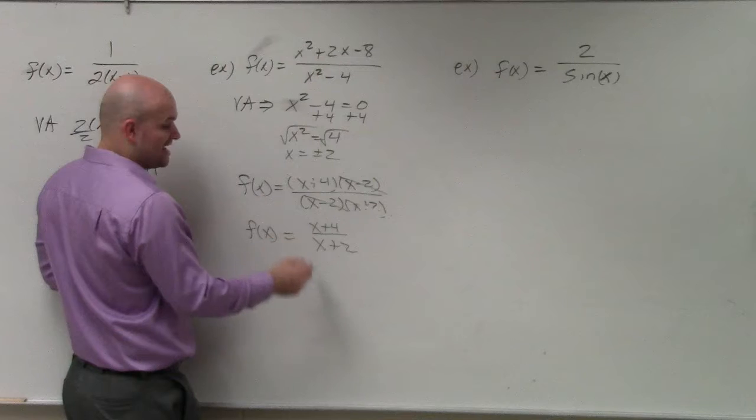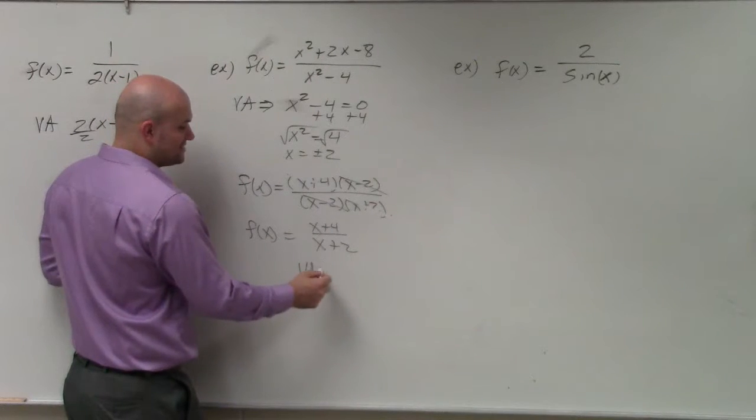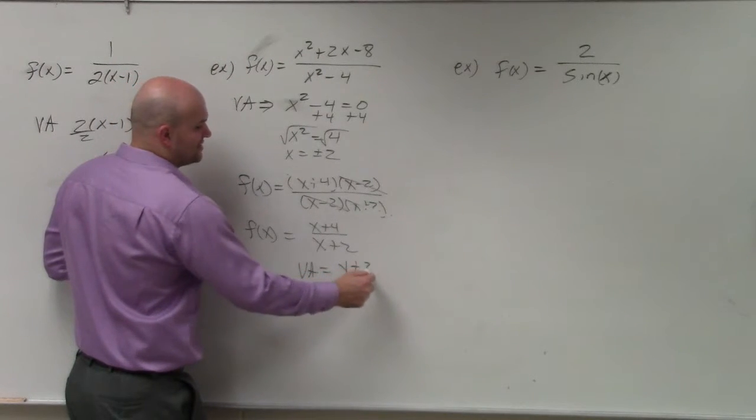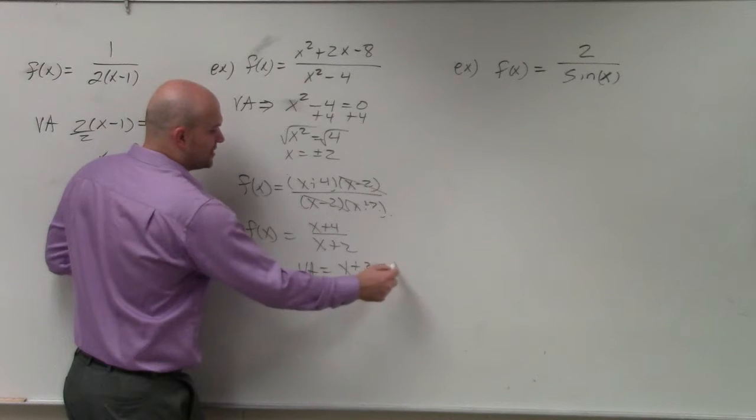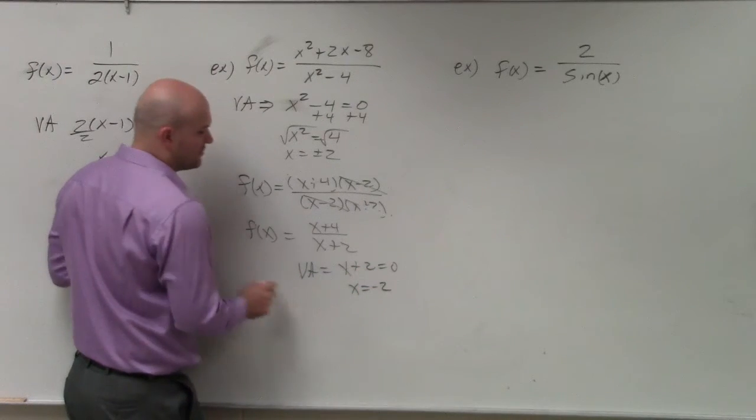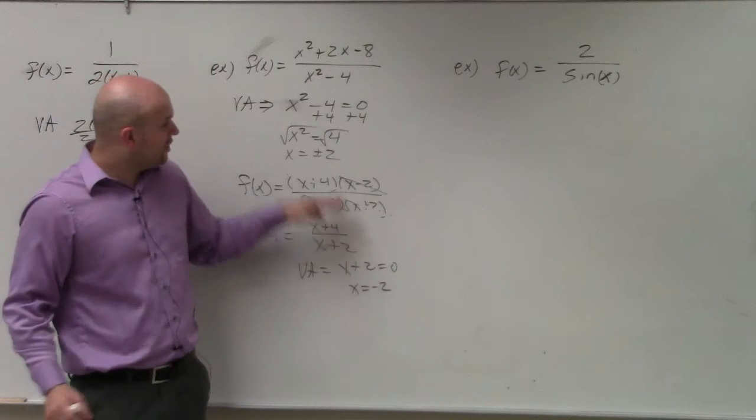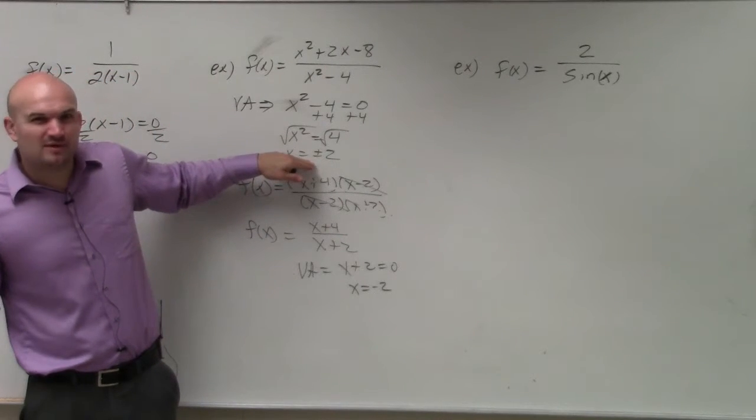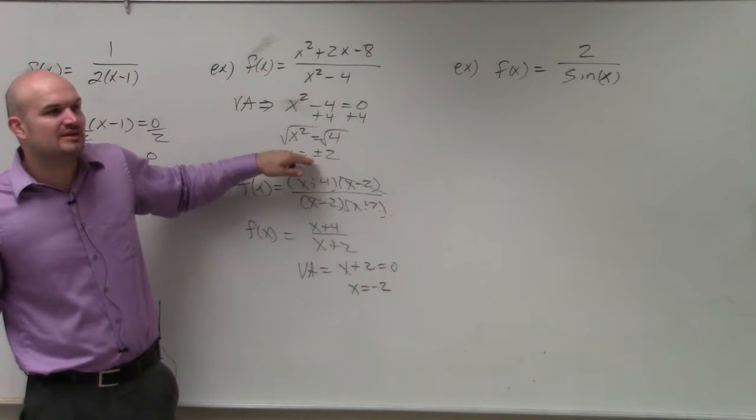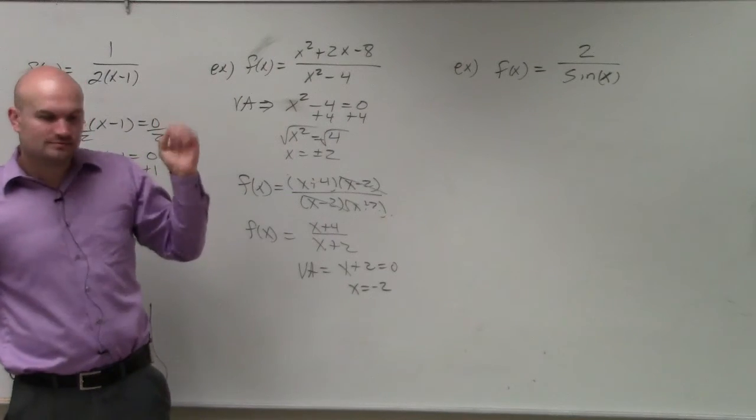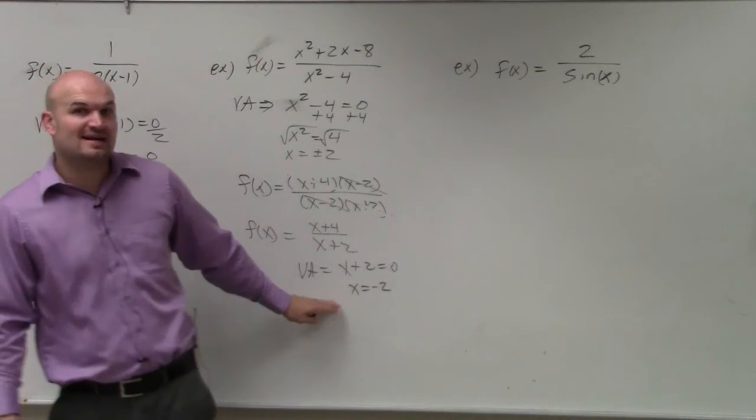So in reality, the only thing that's not removable, our real vertical asymptote, is x plus 2 equals 0. So x equals negative 2 is our vertical asymptote. So what is this x minus 2 then? What does that occur in our graph? That's going to be a hole. So our only vertical asymptote is that x equals negative 2.